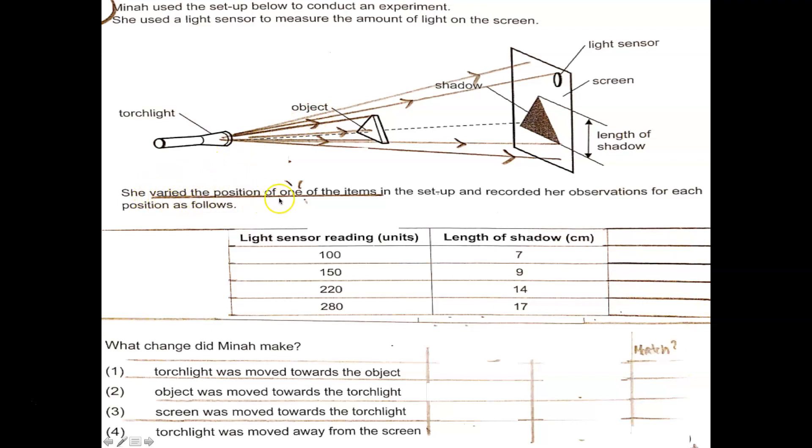Now she varied the position of one of the items in the setup and recorded her observations for each position as follows. Now what is this one of the items? We do not know. We know it could be the torchlight, it could be the object, or it could be the screen. But what we do have is we have some data or results.